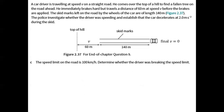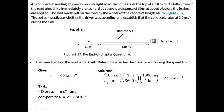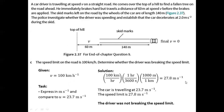Third question: the speed limit on the road is 100 kilometers per hour. To determine whether the driver was breaking the speed limit, we express this speed in meters per second by multiplying by the conversion factors — 1 hour equals 3600 seconds and 1000 meters equals 1 kilometer — giving us 27.8 meters per second. The car is traveling at 23.7 meters per second, while the speed limit is 27.8 meters per second, so the driver was not breaking the speed limit.